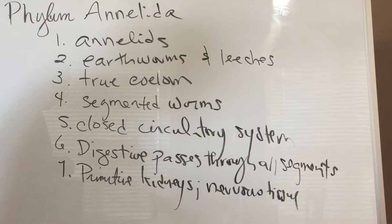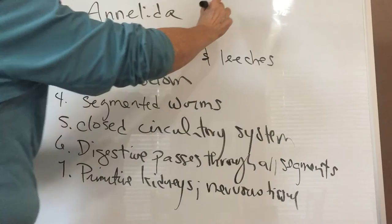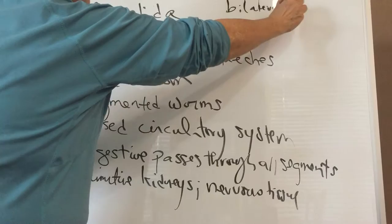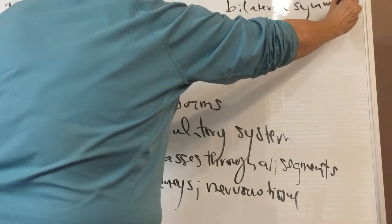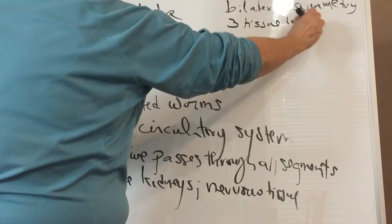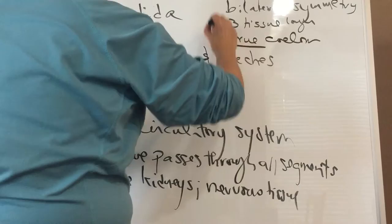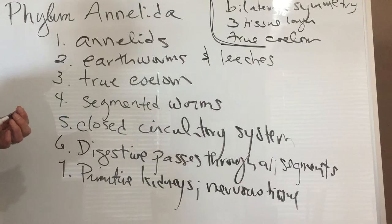Okay, I think that's probably everything that I wanted to cover with this group. Again, we have a group that has bilateral symmetry, that's three tissue layers, a true coelom, and a digestive system with two openings. The next group we're going to cover in the next video clip are the mollusks.